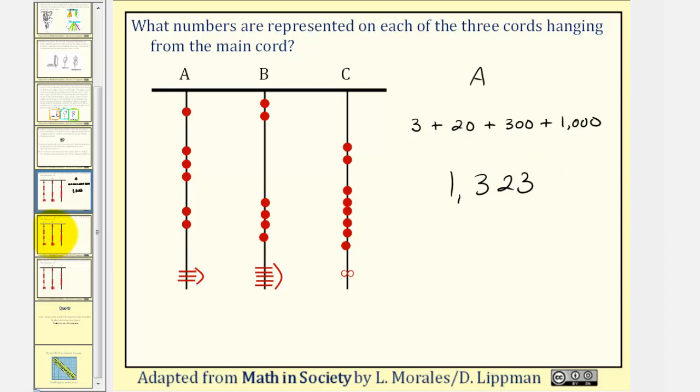Now let's take a look at cord B. Again, starting at the ones place value, there are one, two, three, four, five horizontal bars here. So we have a long knot with five turns, so we have a five in the ones place value. Plus, we have one, two, three, four knots in the tens place value, that's forty. Plus, we have zero knots in the hundreds place value, but we have two in the thousands place value, so we have plus two thousand. So the total for cord B would be two thousand, forty-five.